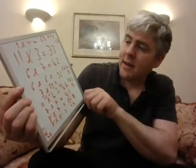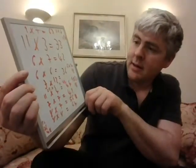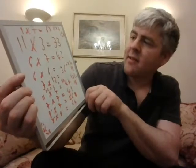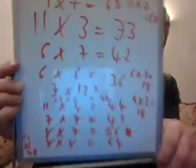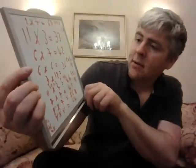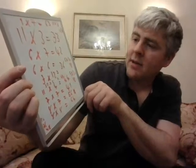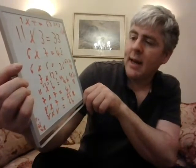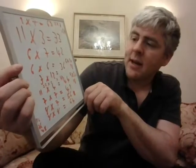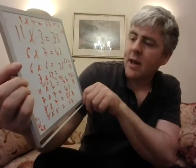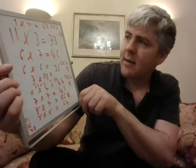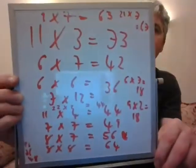Six times six equals 36, and three times 12 equals 36. Six times three equals 18, and two times nine equals 18. Eleven times four is 44. Seven times seven is 49. Seven times eight is 56, and eight times eight is 64. I just want you to see that.